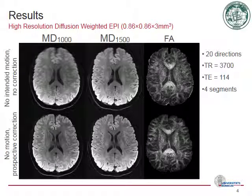The MUSE approach allows for high resolution DWI. However, due to the high resolution and the long examination times, the scan becomes extremely sensitive to subject motion. Even unintended movements in the millimeter range lead to blurring in the processed data.